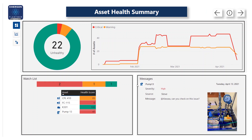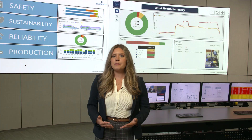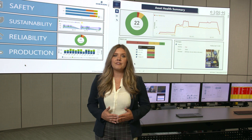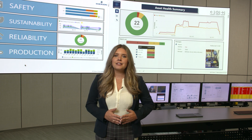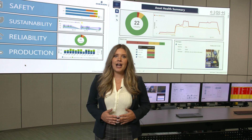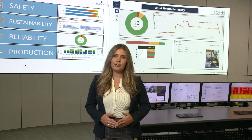Here I can see that of the assets I'm responsible for, 22 of these are unhealthy. I can also see that I have some assets on my watch list that I've already identified as important to me — maybe they're critical for my production, maybe they have a safety impact — but this allows me to closely monitor these assets for any change in their health.